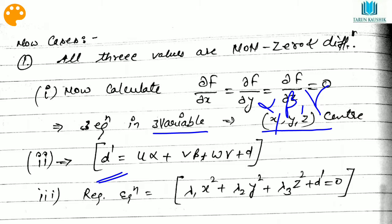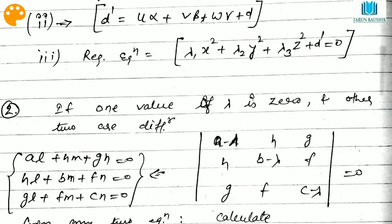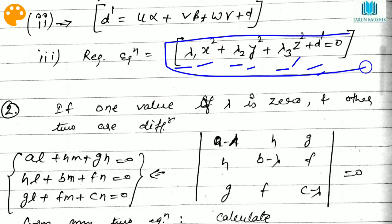After calculating d', the required standard equation will be: lambda₁x² + lambda₂y² + lambda₃z² + d' = 0. This is our standard form, and we have reduced the original equation to it.